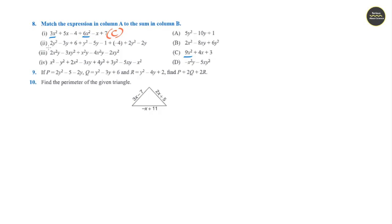Question 2: Adding 2y square and y square gives 3y square; 3y square plus 2y square gives 5y square. There is only one option having 5y square, so question 2 matches with option a. Question 3: 2x square y plus x square y is 3x square y; minus 4x square y gives minus x square y. That is option d. Question 4: x square plus 2x square gives 3x square; minus x square gives 2x square. That is option b.